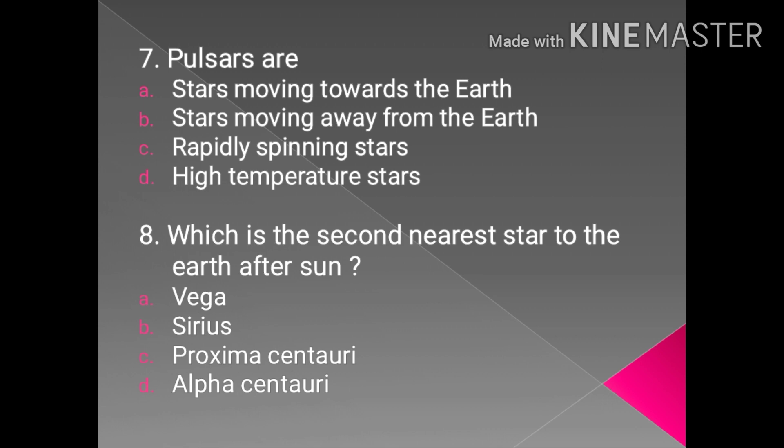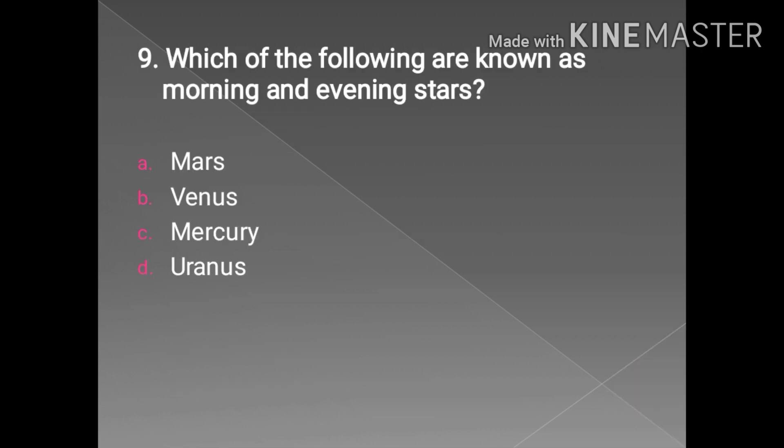Moving on the next slide, we have the question: which of the following is known as morning and evening star? The correct answer is Venus. Venus is known as morning star and the evening star because it appears brightest shortly before sunrise and shortly after sunset.